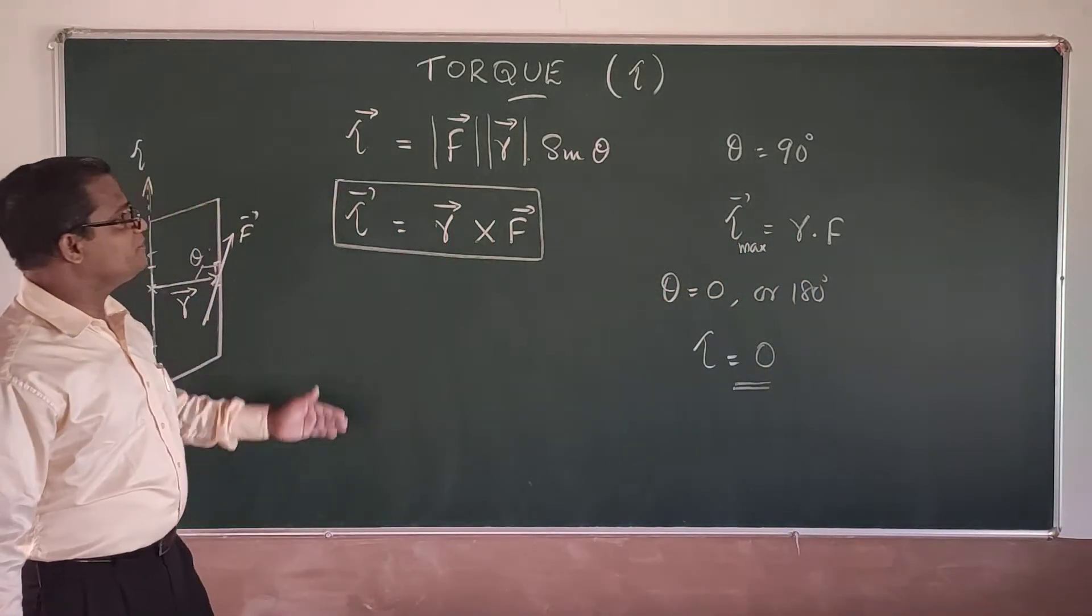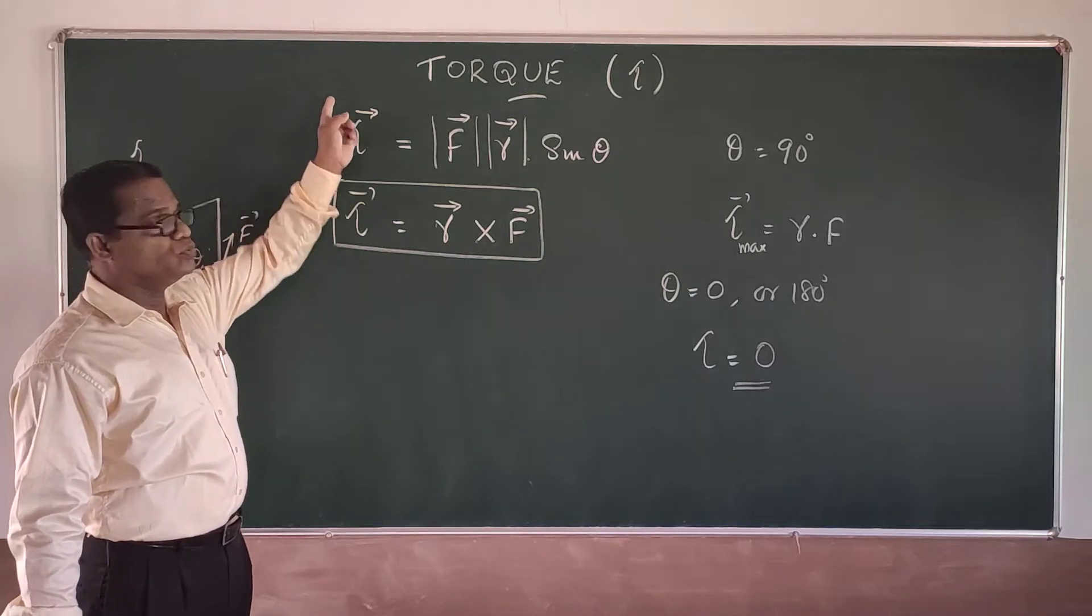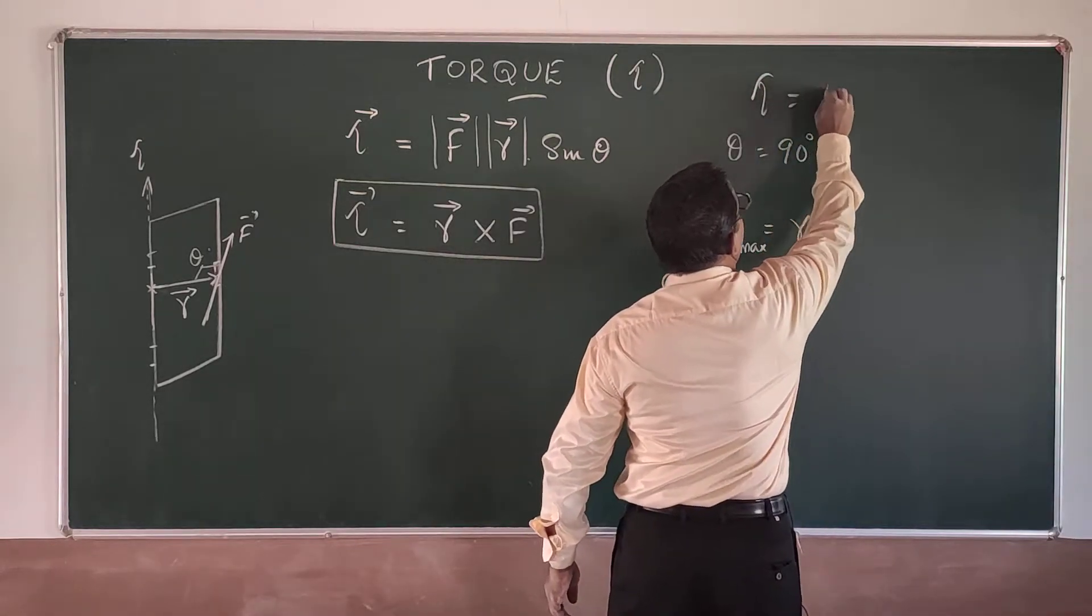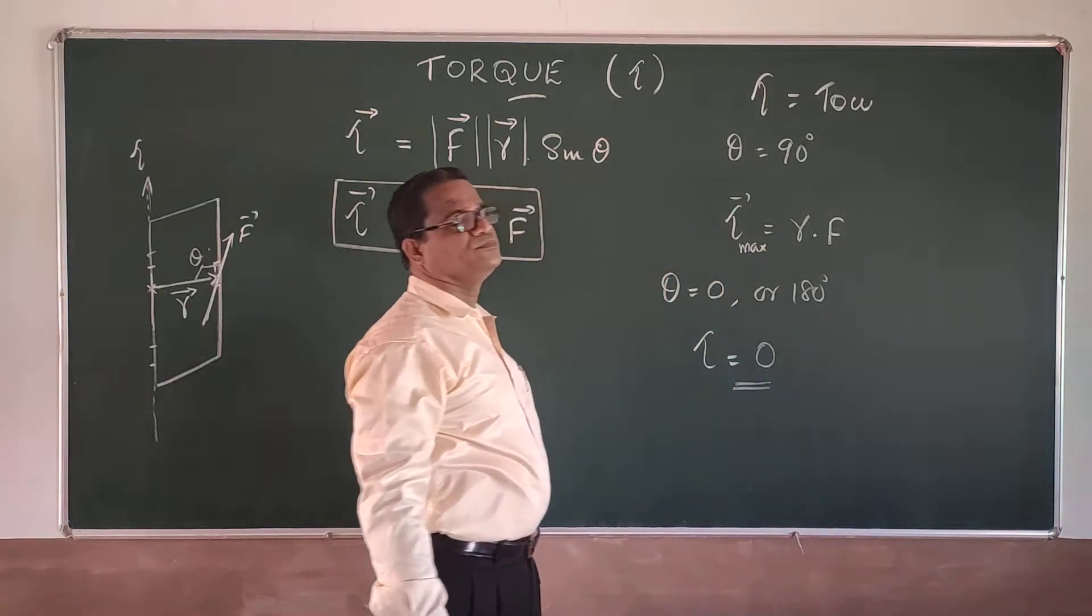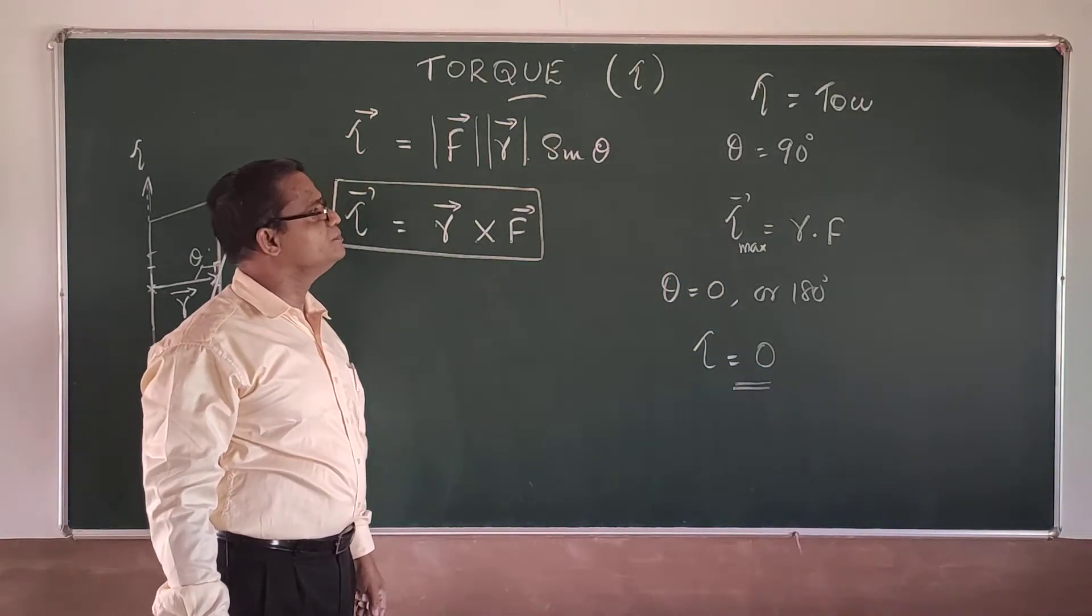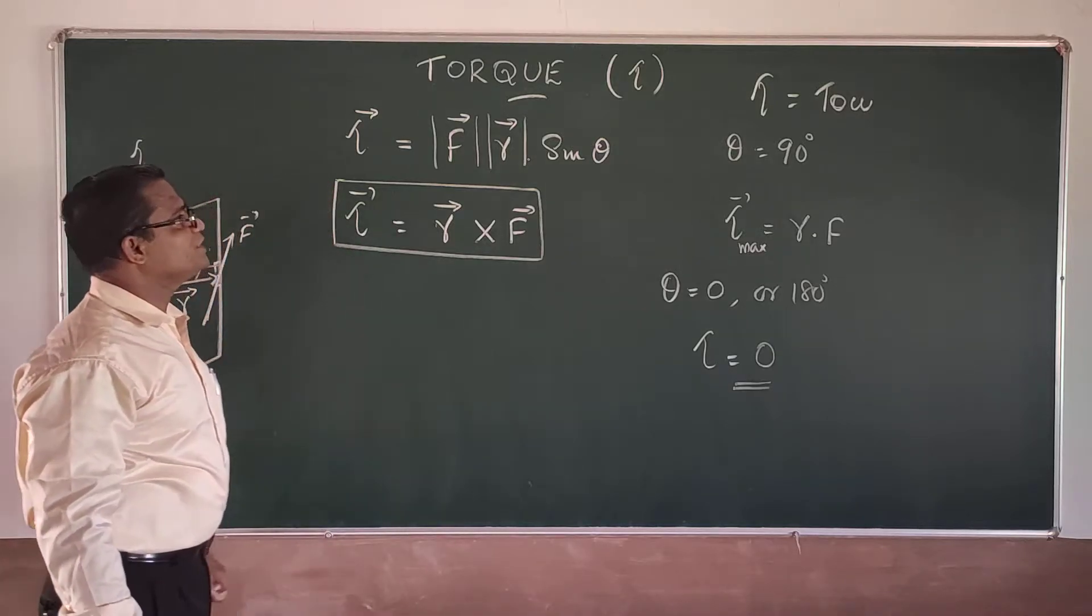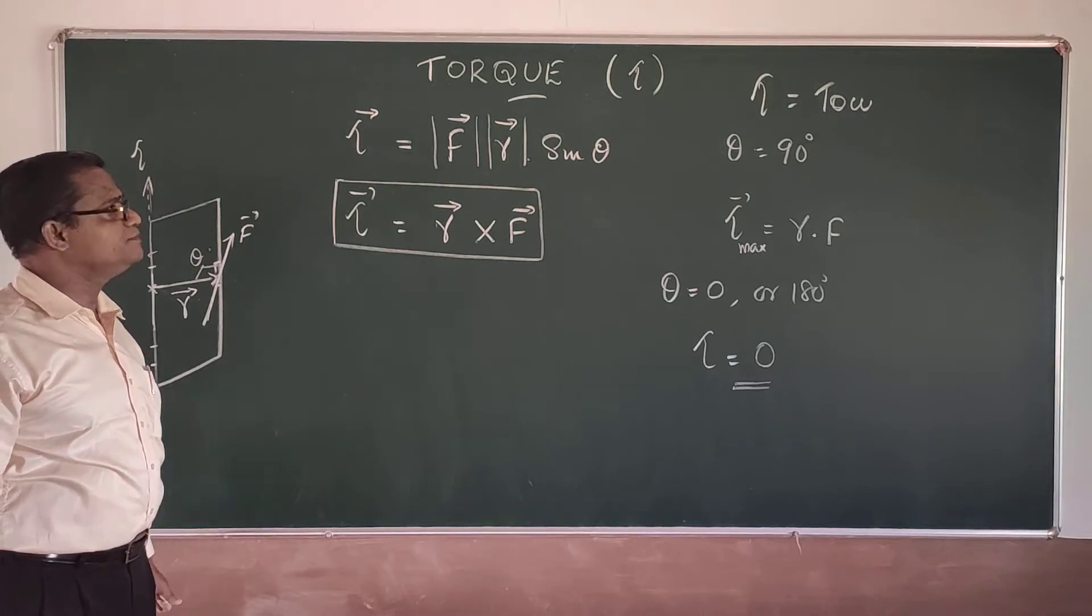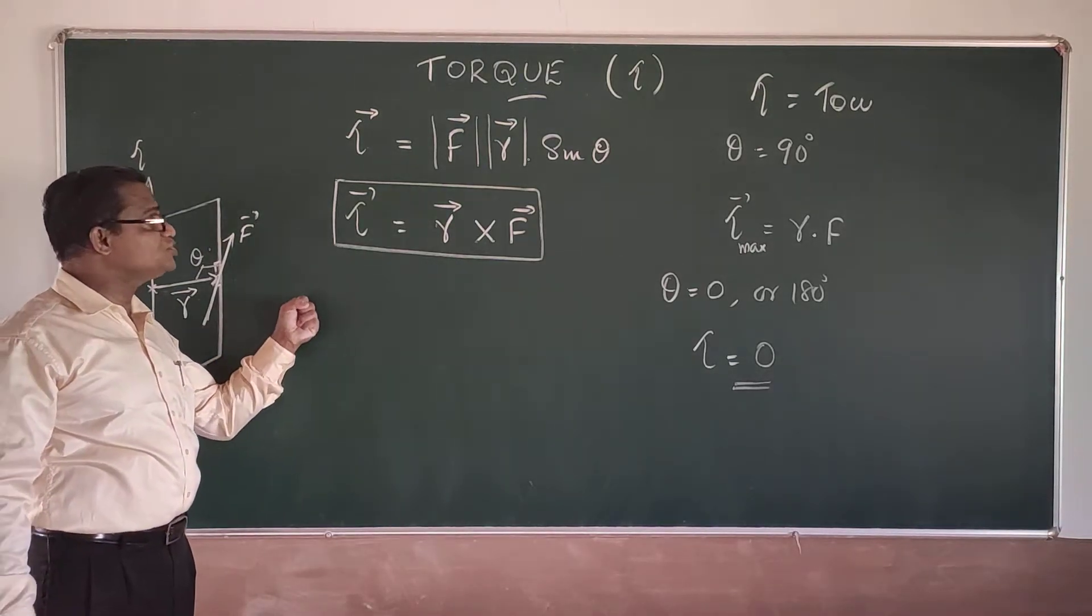Okay, so these are the facts related to what you call the torque and it is denoted by tau. It reads as tau, Greek alphabet. So rotating effect of force, maximum, minimum, everything we understood.